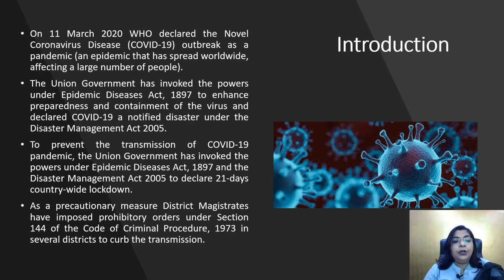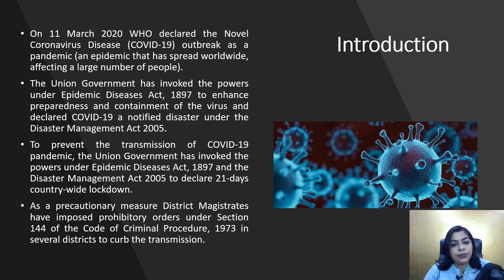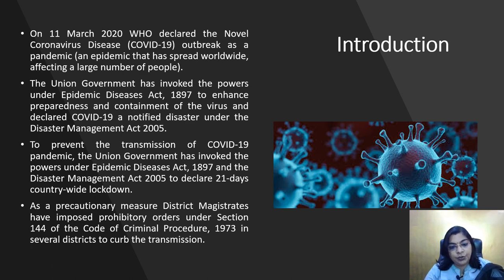Furthermore, to prevent the transmission of COVID-19, the Union Government has invoked powers under the Epidemic Act 1897 and Disaster Management Act 2005 to declare a 21-day countrywide lockdown. As a precautionary measure, district magistrates have imposed prohibitory orders under Section 144 of the Code of Criminal Procedure 1973 in several districts to curb the transmission.